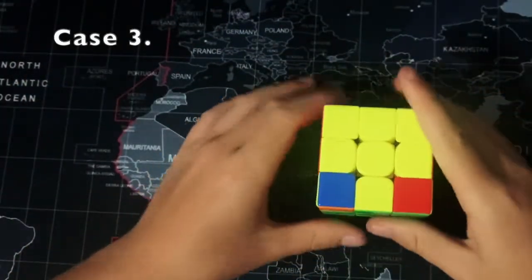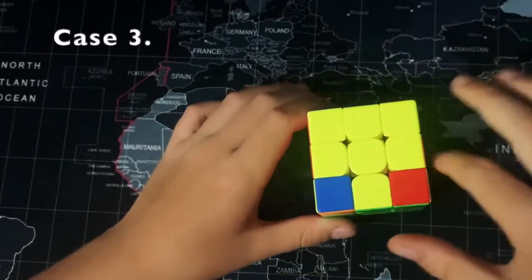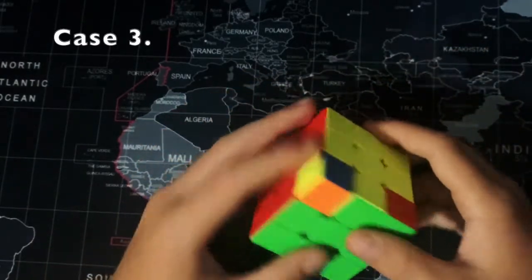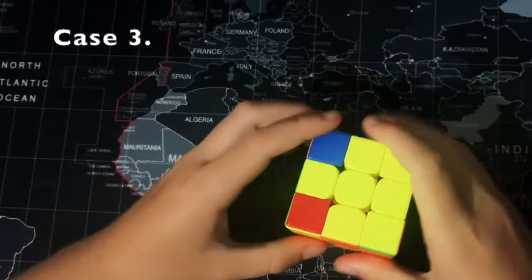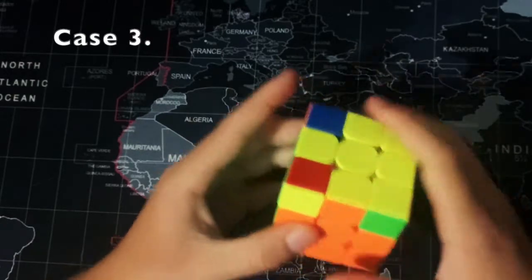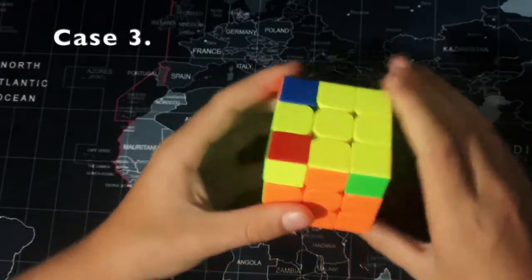Onto the next case. This case we have a cross with two pieces over here, a piece over here, and a piece over here. You're going to hold it with these two pieces like that, and you want to hold it like this and you'll do this algorithm.